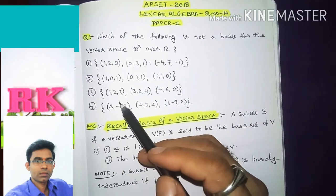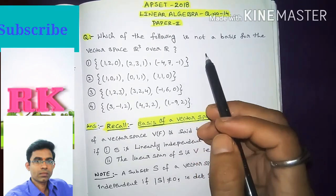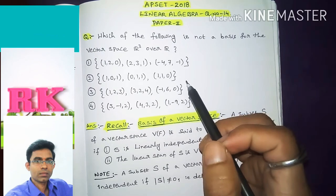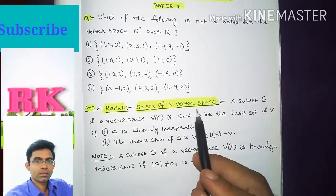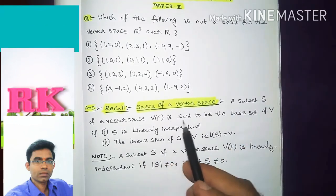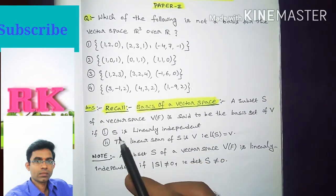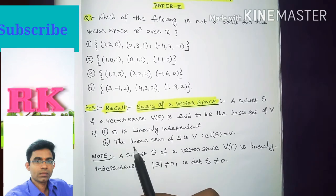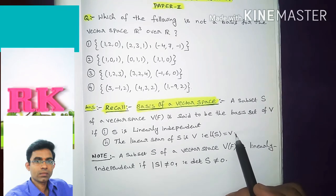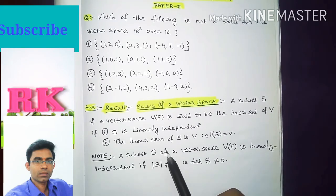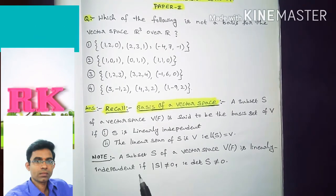The question is about the basis of a vector space, so first we recall the definition. A subset S of a vector space V over F is said to be a basis of V if it satisfies two conditions: first, S is linearly independent; and second, the linear span of S is V, that is L(S) equals V. This is the definition of basis for a vector space.